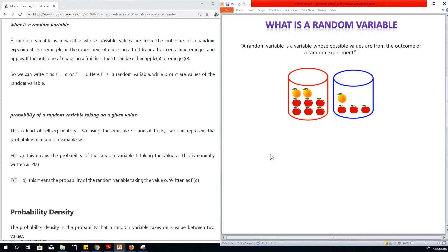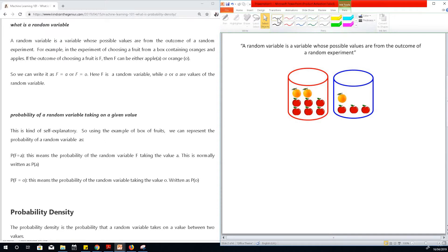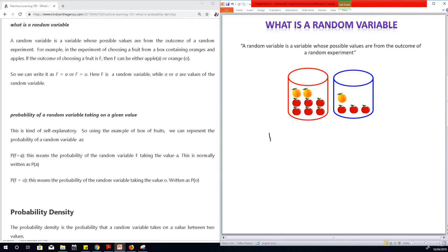Now in data science and machine learning, a variable normally should have a name. So in this case, let's call the random variable f. So f is a random variable in this case, and f could have two possible values.